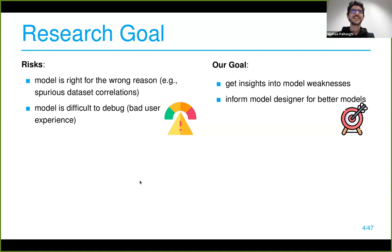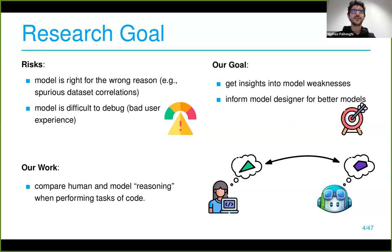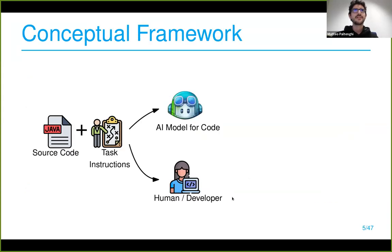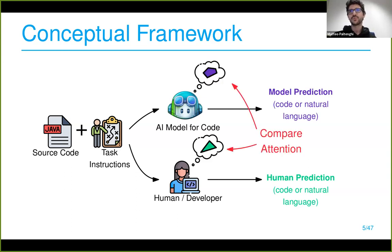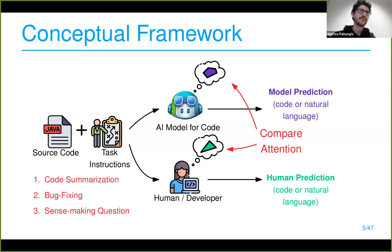The goal of our work is to compare what could be the reasoning — the 'why' — of a model on the right and the attention of a human, on tasks involving code. Throughout the talk I'll use this framework: we have source code and specific task instructions fed both to the AI — like Copilot or other specialized tools — and to the human or developer, then we gather predictions and compare attention while doing this specific task.